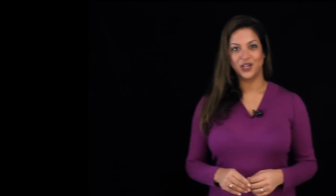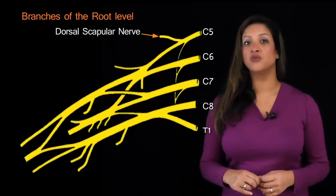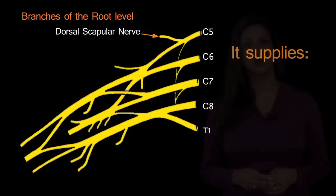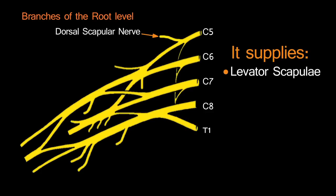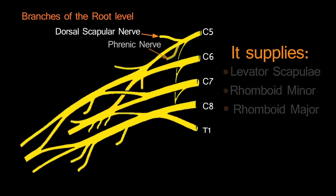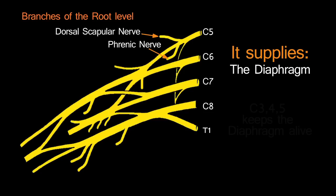The brachial plexus has a number of branches. There are 3 main branches given off at the root level. The first is the dorsal scapular nerve, derived from C5, which supplies three muscles on the back of the trunk: levator scapulae, rhomboid minor, and rhomboid major. C5 also gives a contribution to the phrenic nerve, which supplies the diaphragm — if you remember the mnemonic 'C3-4-5 keeps the diaphragm alive,' there's the contribution from C5.